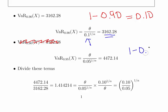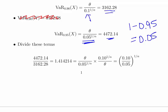Do the same thing again down here. 1 minus 0.95 gives us 0.05. So 0.05 to the power of 1 over alpha. So we're dividing theta by that value there and we get 4472.14. So essentially what we're going to do is a simultaneous equations thing. Divide one by the other.